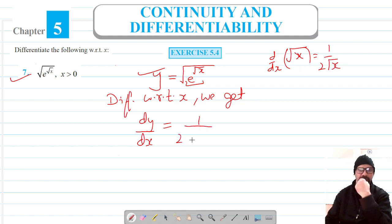So this should be 1 by 2 root of e raised power root x, and has to be multiplied with the differentiation of e raised power root x.